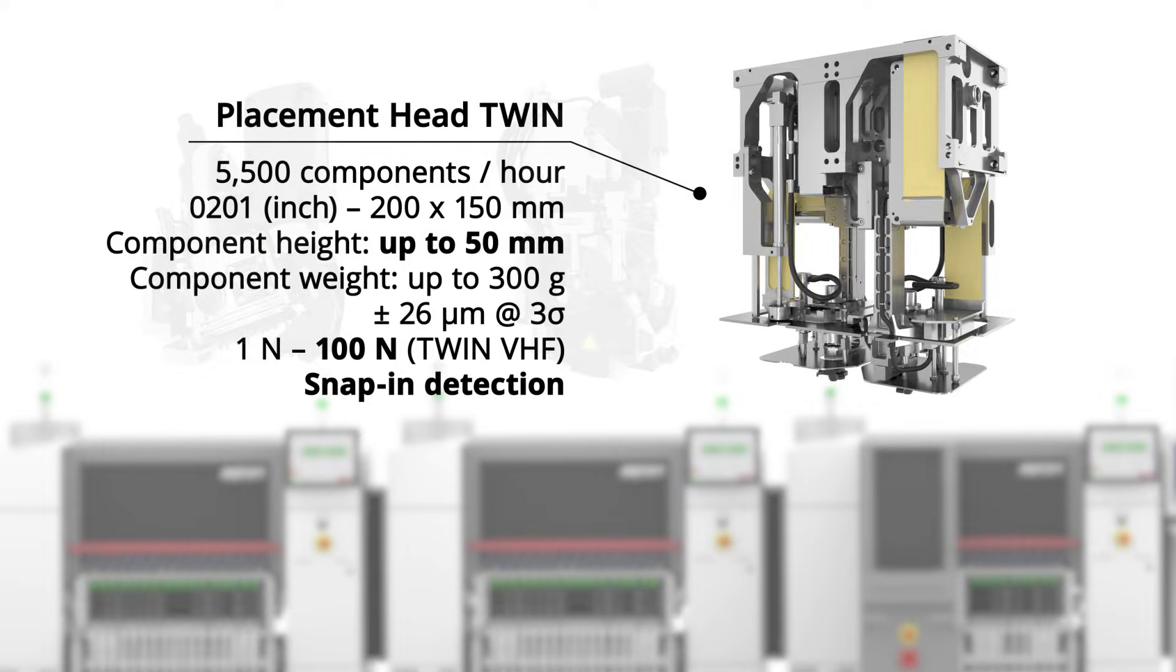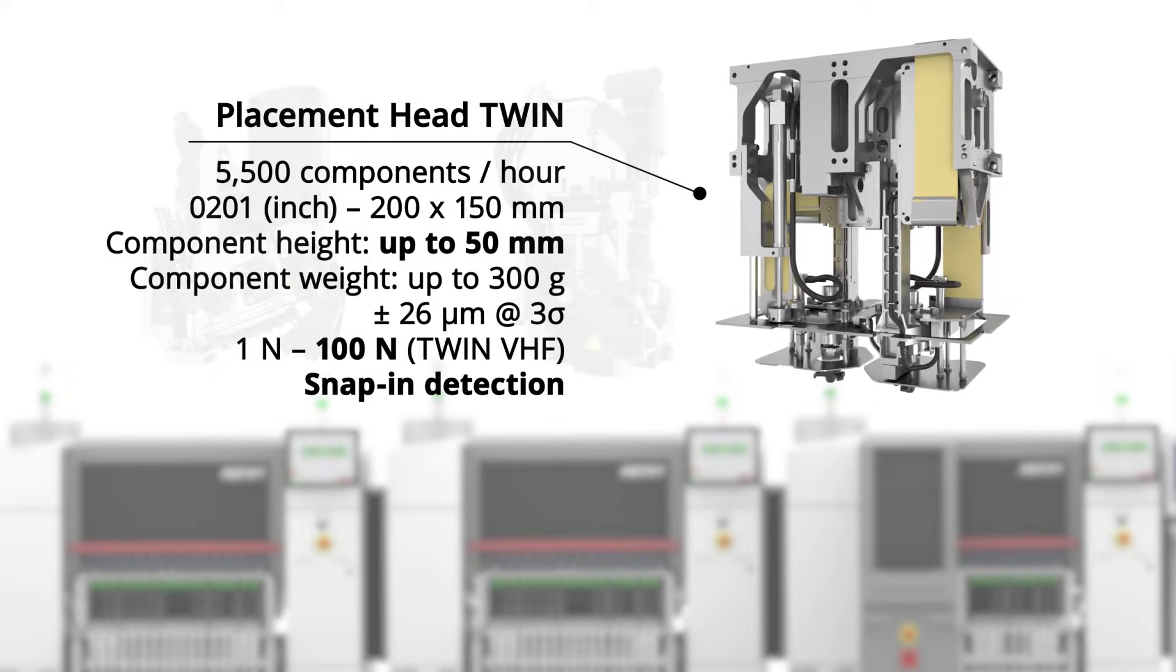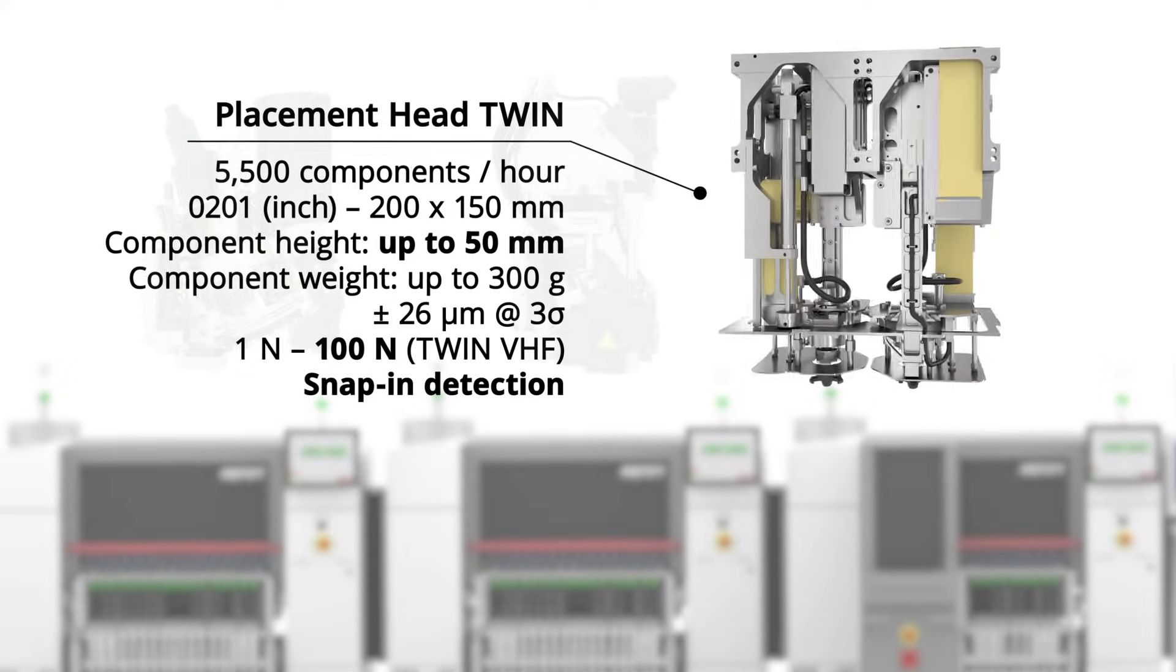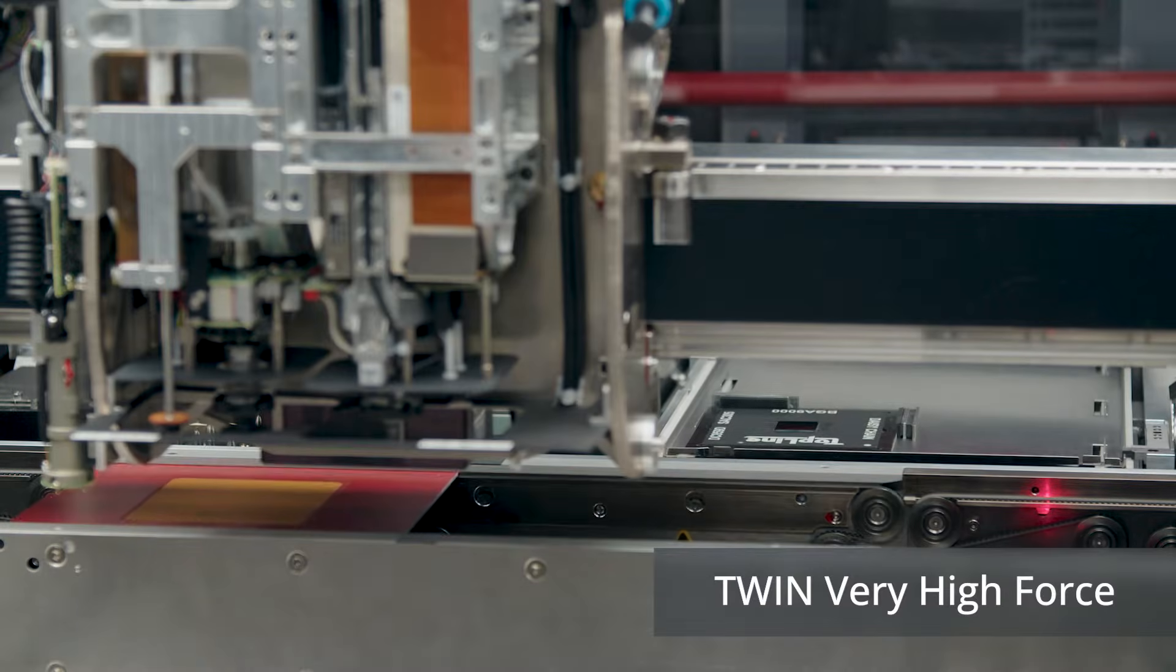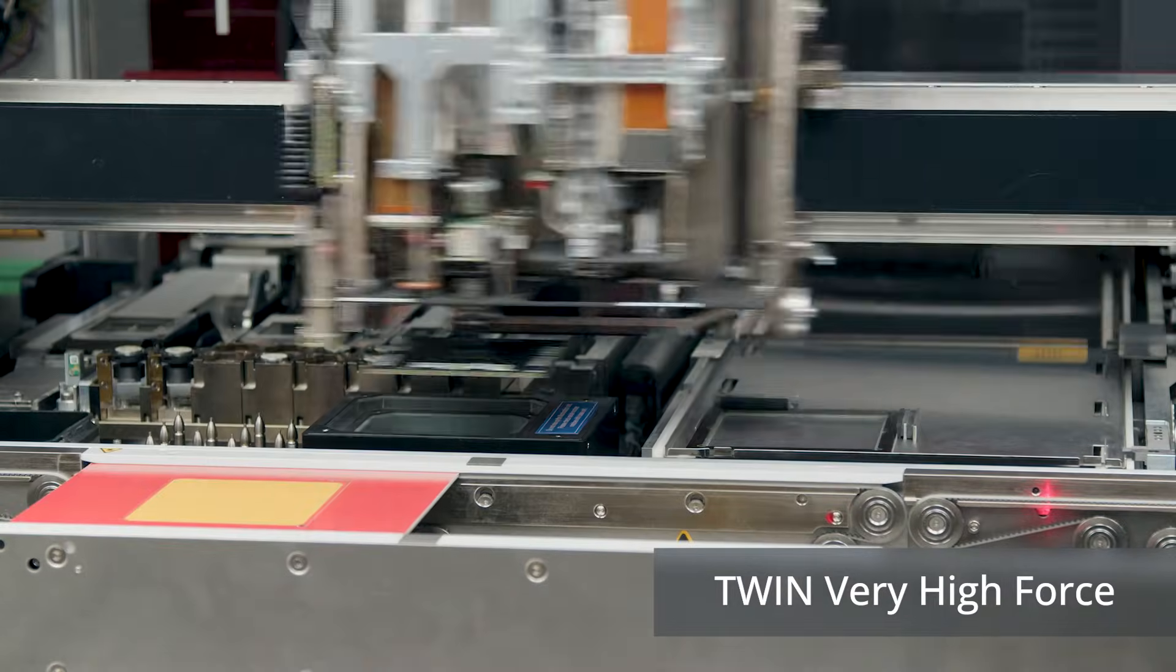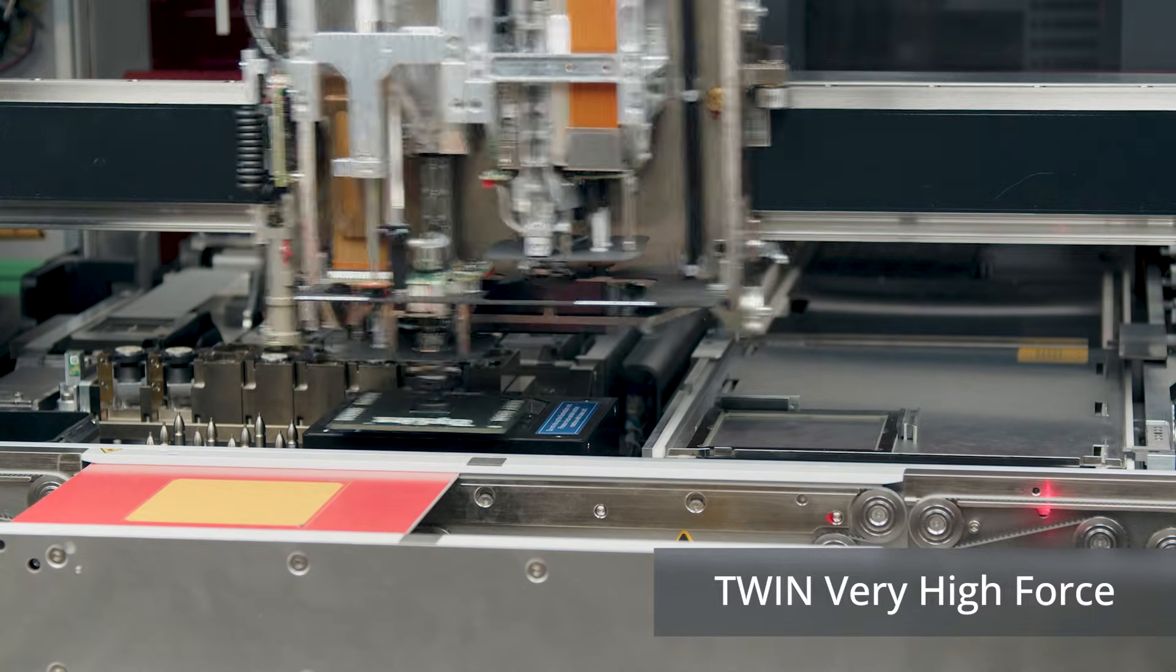At the end of the line, the highly reliable placement head Twin is ideal for placing large, heavy, and irregular-shaped components. The very high-force Twin head can place components weighing up to 300 grams with extreme precision.